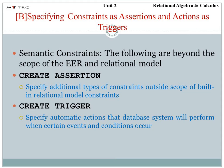Before going into greater depth, first of all we must know what is a semantic constraint. We have the EER enhanced entity model and we have the relational model. The semantic constraint defines how the context and syntax of that model is going to be defined. We have the create assertion command, which specifies additional types of constraints outside the scope of built-in relational model constraints such as domain constraint, key, entity integrity, and referential integrity. Beyond those, if we have any constraint specified outside, we use the create assertion command.